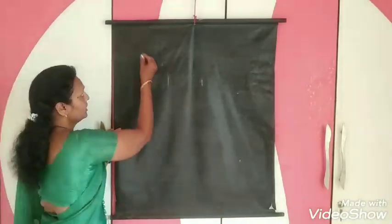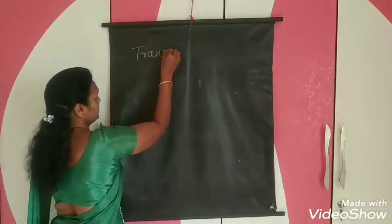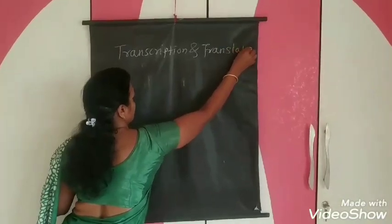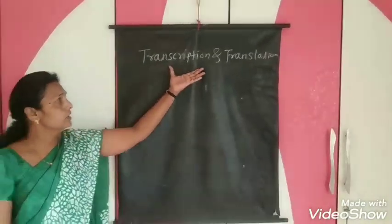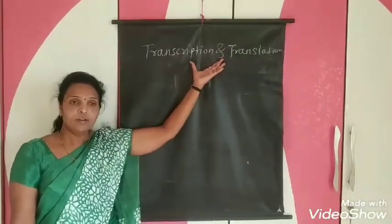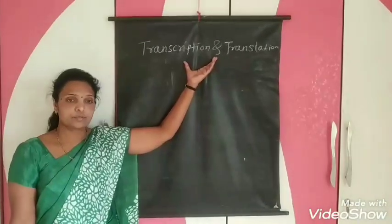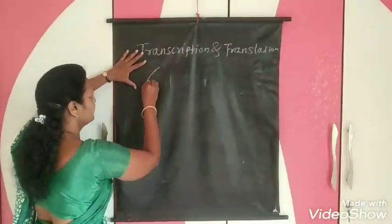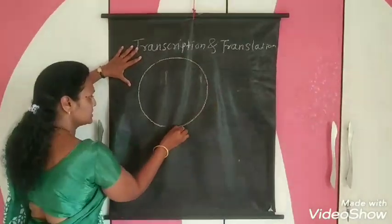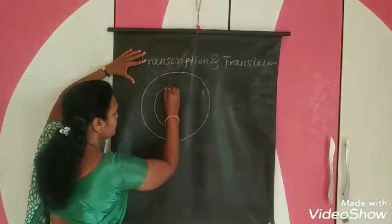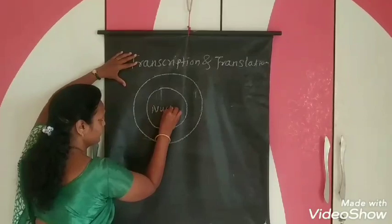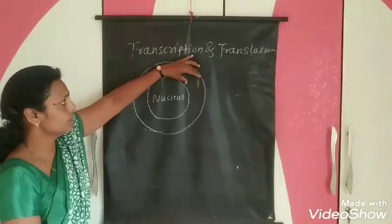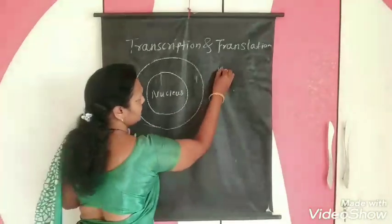Now, transcription and translation. These both processes occur due to changes in DNA. DNA is present in a chromosome, DNA is present in the nucleus, and the nucleus is present inside the cell. Inside the cell there is a nucleus, and outside the nucleus there are RNA molecules.